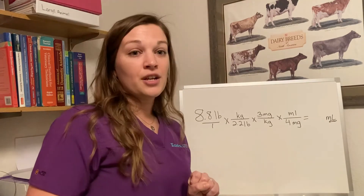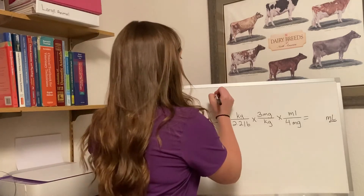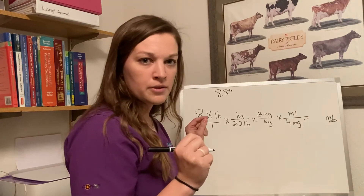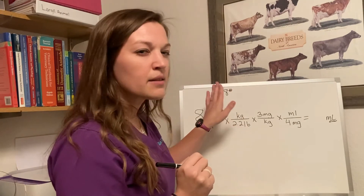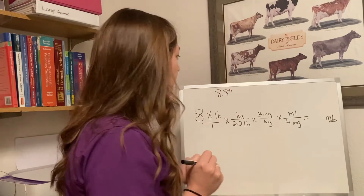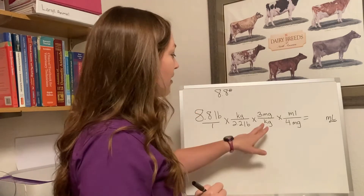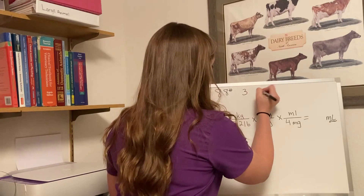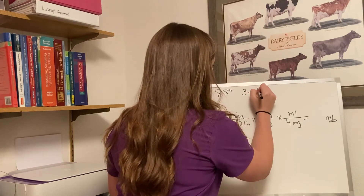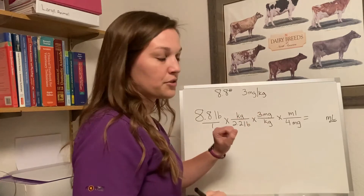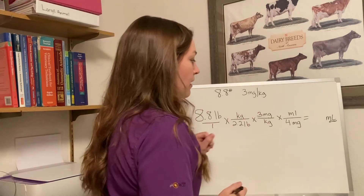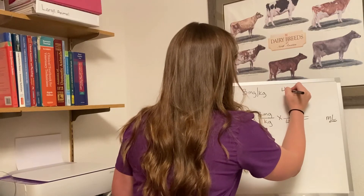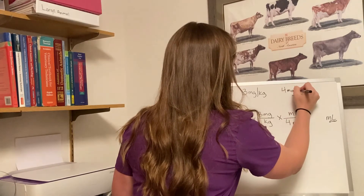So to set up this equation: the doctor says we have an 8.8-pound patient. For you young folks, that old-school sign is the pound sign, not just the hashtag. Our dosage we want to give is 3 mg/kg — that's our dosage. And our concentration is going to be 4 mg/mL.